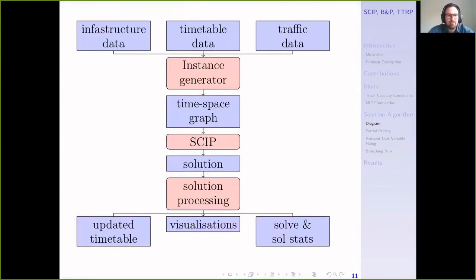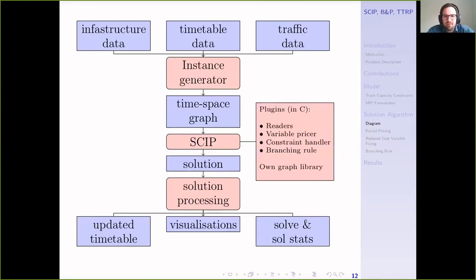This is the overall setup in terms of the flow of data. We start with data about the infrastructure, the timetable, and the traffic data because we need to know what the initial disturbances were. This feeds into an instance generator which creates the time-space graph. That's read in by SCIP, which hopefully solves it and gives a solution. That eventually turns into an updated timetable, which is the key output. SCIP is in the heart here as the solver.